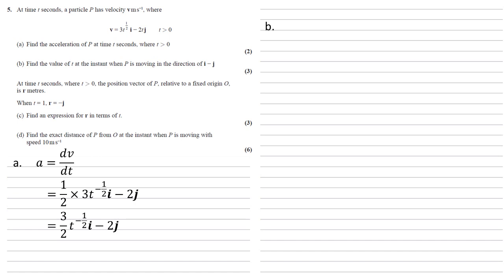For part b, we need to find the value of t at the instant when p is moving in the direction of i minus j. So we've been given our velocity, 3t to the half i minus 2t j. For the particle to be moving in the direction of i minus j, we need our velocity to be a multiple of this.